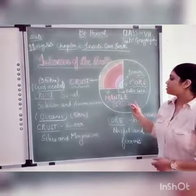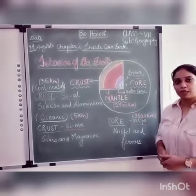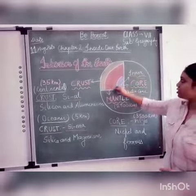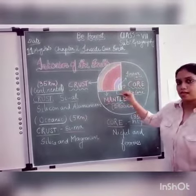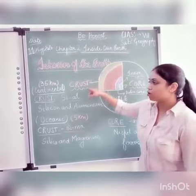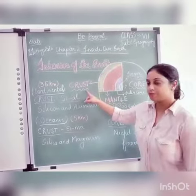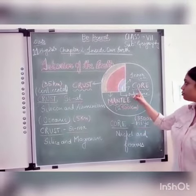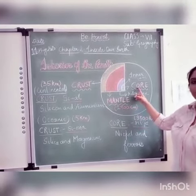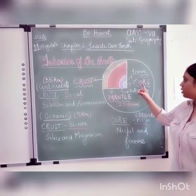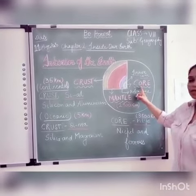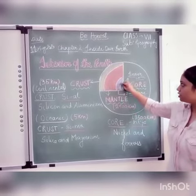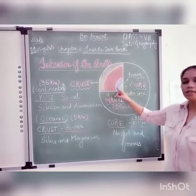This is the diagram showing the interior of the earth. Here you can see the interior of the earth has three major layers. The outermost layer is called crust, the middle layer is called mantle, and the innermost layer is called core. The core is further divided into two parts: the inner core and the outer core.